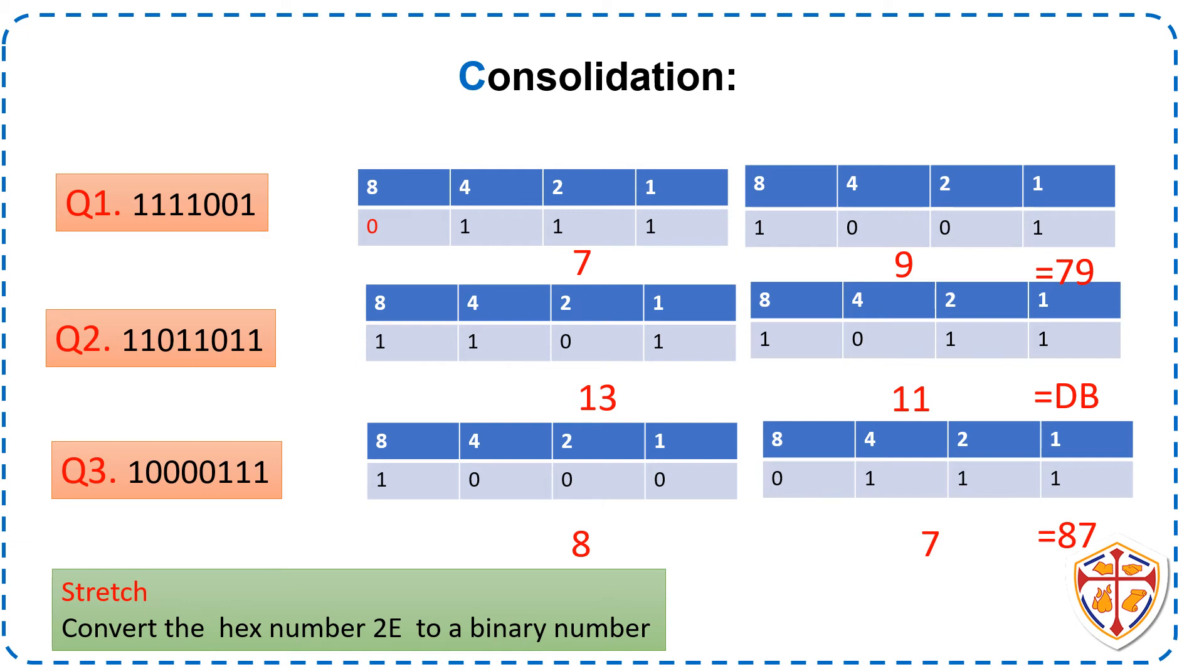Question 2. We have 8 bits. So we split into nibbles. The first nibble we added 8 plus 4 plus 1. We got 13. 13 as a hex is the letter D. Nibble 2. We added 8 plus 2 plus 1. We got 11. 11 as a hex is the letter B. Put our answers together. The answer is DB.